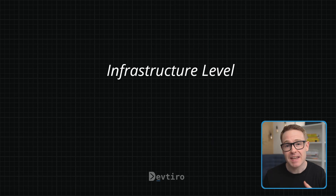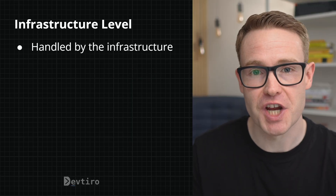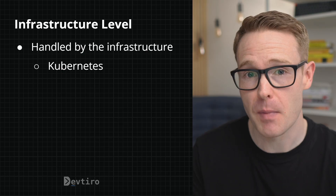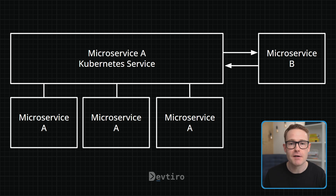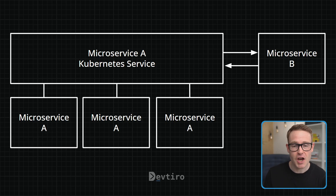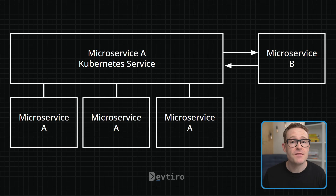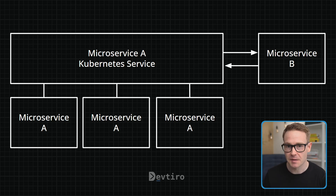The other way to implement service discovery is at the infrastructure level. This approach is completely handled by the infrastructure, and technologies like Kubernetes offer this out of the box. In the Kubernetes approach, you declare a Kubernetes service that points to a specific type of microservice. That Kubernetes service exposes a DNS name which can be used by any microservice in the cluster to communicate with that specific type — regardless of the number of instances running. The Kubernetes service routes traffic to your various instances much like a load balancer. All that remains is to configure each microservice to use that DNS name, though each microservice must be running in the Kubernetes cluster for that DNS name to work.